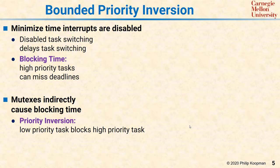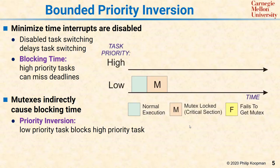Priority inversion is when a low priority task blocks high priority tasks by tying up the CPU or a shared resource. In this example — time going from left to right — we have a high priority task and a low priority task. The low priority task is doing normal execution, and in the orange section it's gotten hold of a mutex, entering a critical section.